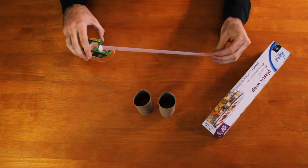We will begin by securing the two rolls of toilet paper with the scotch tape, like so.